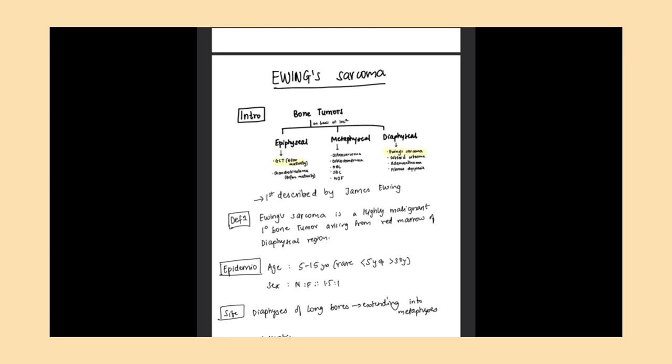Coming to Ewing sarcoma, it was first described by James Ewing, hence the name. The definition of Ewing sarcoma is: a highly malignant primary bone tumor arising from the red marrow of the diaphyseal region of long bones.